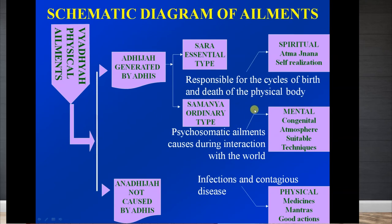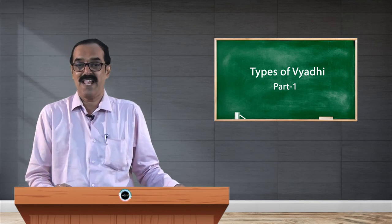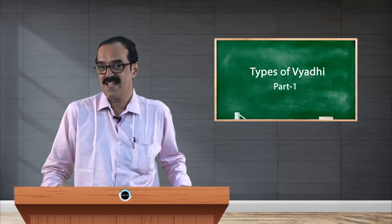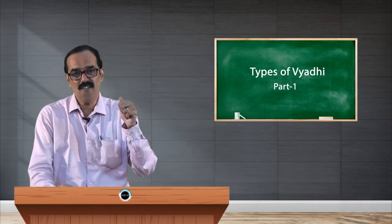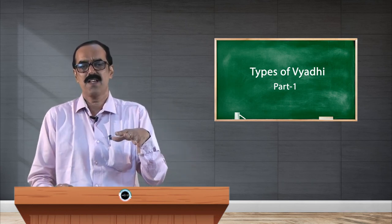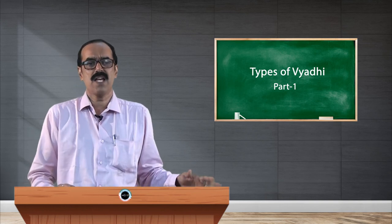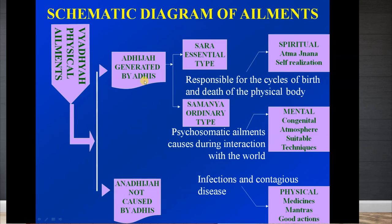Sara type vyadhi includes diseases from congenital anomalies — Type 1 diabetes, congenital heart disease, hereditary diseases, Down syndrome, mental retardation, and cardiac defects such as atrial or ventricular septal defects. These are responsible for the cycle of birth and death of the physical body. Samanya type, the ordinary type, refers to diseases we acquire when we interact with the world — we cannot influence our birth, but we can influence our destiny.